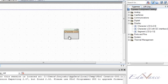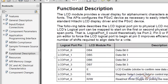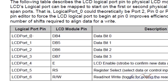This is your character LCD component that you can drag and drop from the component catalog. In the data sheet you have the functional description where port 0 of your LCD component is data bit 0, port 1 is data bit 1, port 2 is data bit 2, port 3 is data bit 3. But for the LCD component, port 0 is DB4, port 1 is DB5, port 2 is DB6, port 3 is DB7. Port 4 is the enable, port 5 is register select, and port 6 is read/write bar.